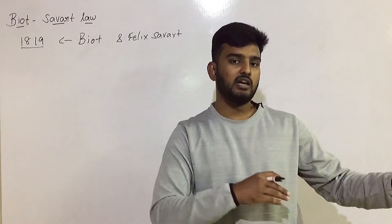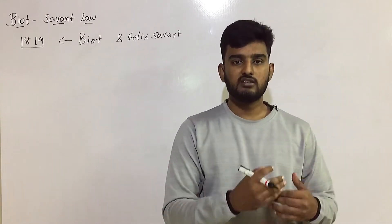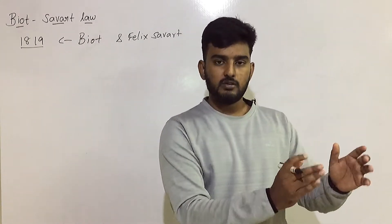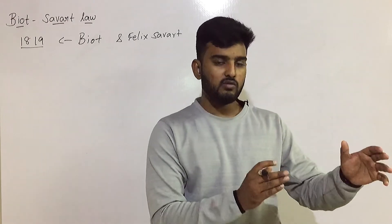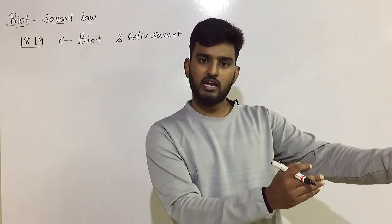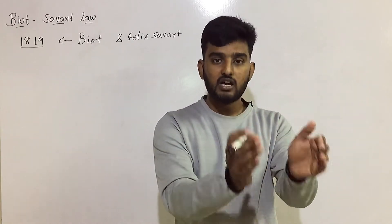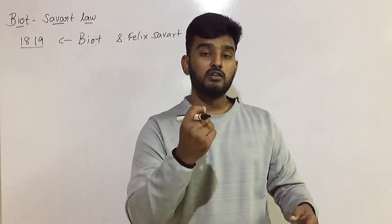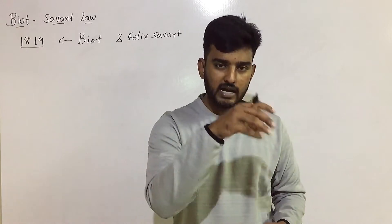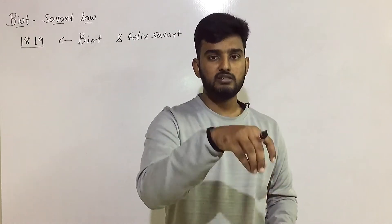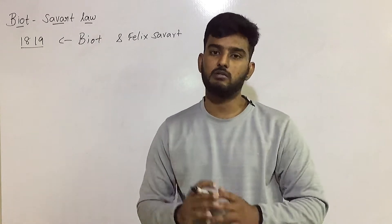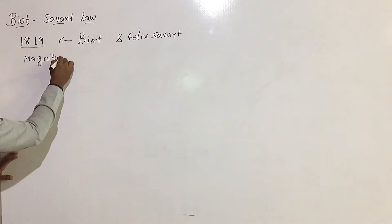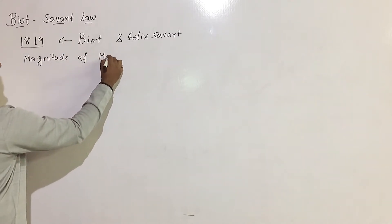Therefore, electricity and magnetism have the same relationship — this is called Electromagnetism. This current-carrying conductor produces a magnetic field. The magnetic compass experiences a force and a current. To measure the magnitude of the magnetic field, we observe the deflection on the magnetic compass.